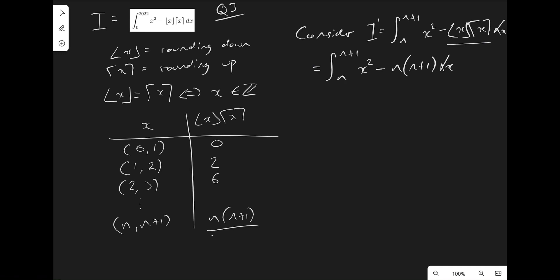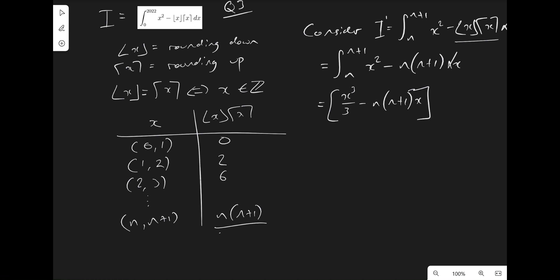So when we compute this integral now, which we're allowed to do because n is just a constant, we can use the power laws and see that this is going to become x cubed over 3. And then we take away n, n plus 1 as a constant. And this is like x to the power of 0. So we raise the power, x to the power of 1, divide by 1. And we'll evaluate this at n and n plus 1.